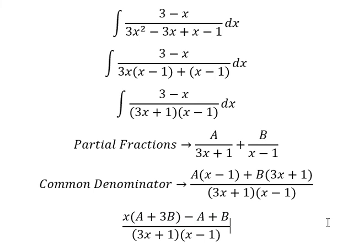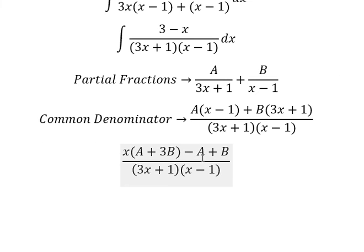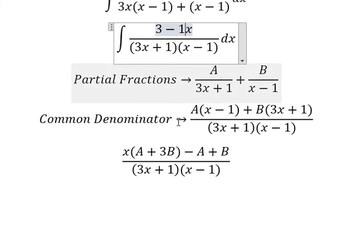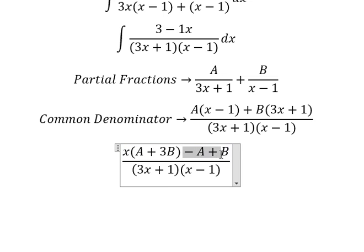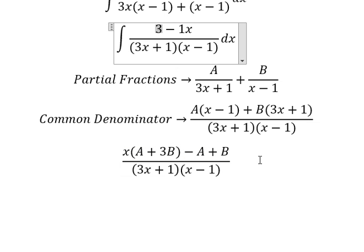Now we need to compare coefficients. For the x term we have -1, so A plus 3B equals negative 1. For the constant term, this one equals to positive 3. Now we create the system of equations.